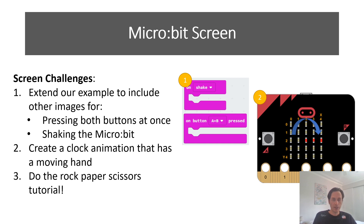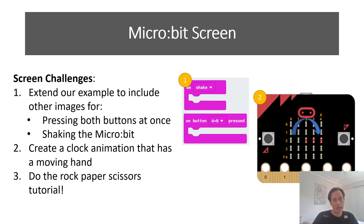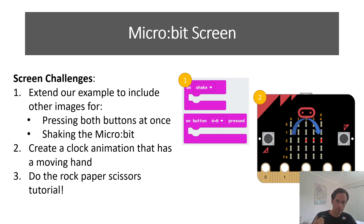To wrap up, here are this week's challenges. The first one is pretty simple: extend our example by adding the 'on shake' and 'on button A+B pressed' functions into your code. It's very similar to button A or button B pressed — just create more variables and images and get them to display when those actions happen.